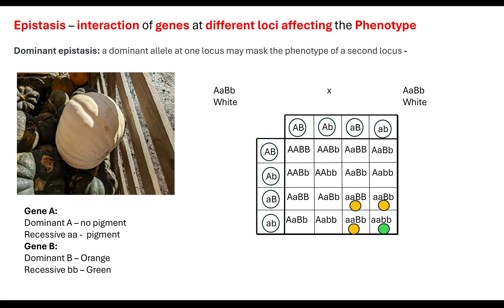When we look at Mendel's law of independent assortment with dihybrid inheritance, we should have a 9:3:3:1 ratio. Quite clearly we do not have that here. What we have instead is 12 white, 3 orange, and 1 green — a ratio of 12:3:1. So if the ratio from a dihybrid cross of two heterozygous individuals does not give a 9:3:3:1 ratio, that could indicate epistasis. The 12:3:1 ratio shows us dominant epistasis. If the recessive trait were white instead of green, that would actually give us a 13:3 ratio — another ratio indicating dominant epistasis.